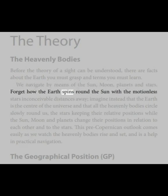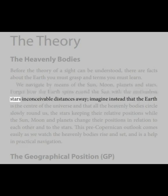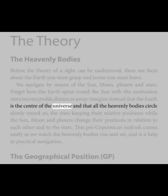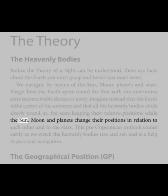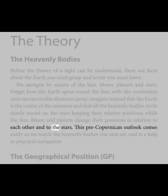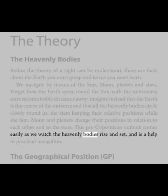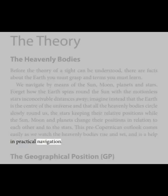Forget how the Earth spins round the sun with the motionless stars inconceivable distances away. Imagine instead that the Earth is the center of the universe, and that all the heavenly bodies circle slowly round us — the stars keeping their relative positions while the sun, moon and planets change their positions in relation to each other and to the stars. This pre-Copernican outlook comes easily as we watch the heavenly bodies rise and set, and is a help in practical navigation.